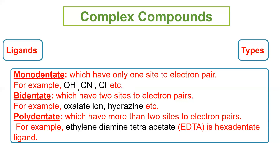Bidentate ligands have two electron pairs to donate. Jaise oxalate ion — is mein oxygen per negative charge hota hai aur yeh dono electron pair donate kar sakti hai. Hydrazine bhi dho electron pair donate kar sakti hai. Polydentate ligands dho se zyadha electron pair donate kar sakte hain. Jaise ethylene diamine tetra acetate (EDTA) jo six electron pairs donate kar sakti hai.